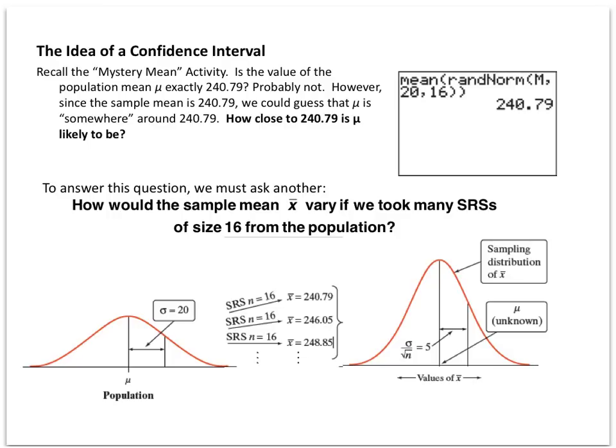If you remember in the mystery mean activity, I put in a mystery number for μ, and you were asked to predict what the mean was using a sample. And if you remember, you typed in random normal μ, 20,